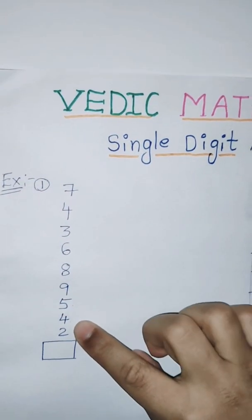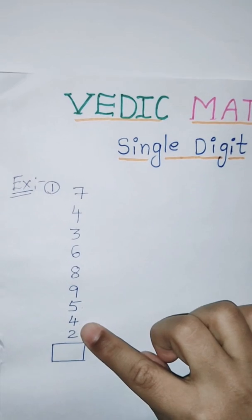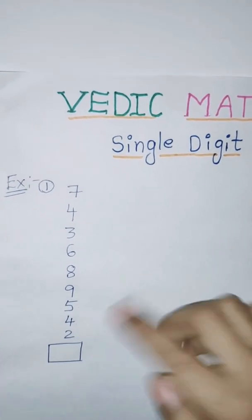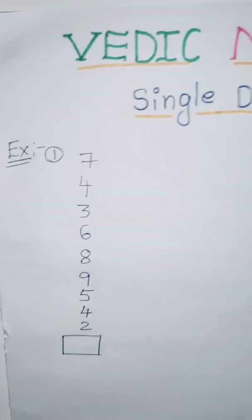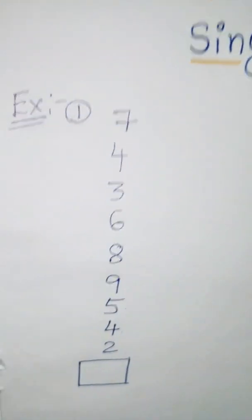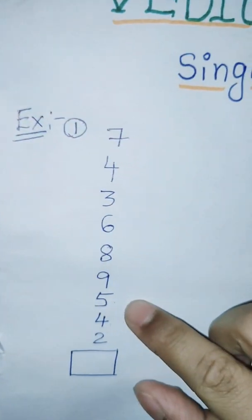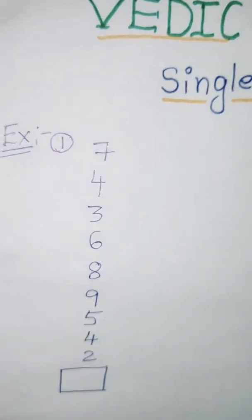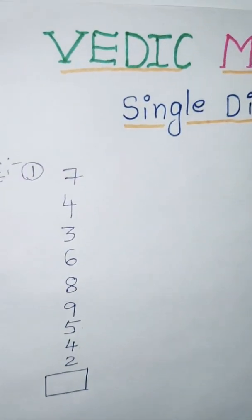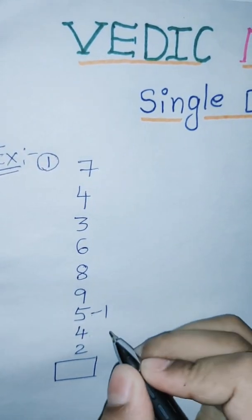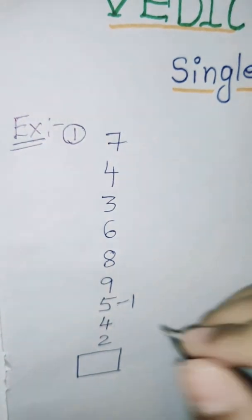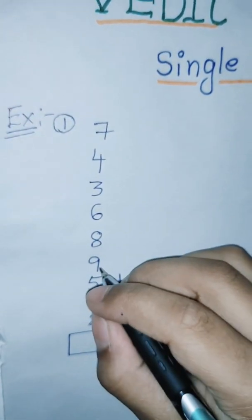Here we have to count numbers from down to up. 2 plus 4 equals 6. 6 plus 5 equals level. Level, it is 1. 1 plus 9 equals to 10.